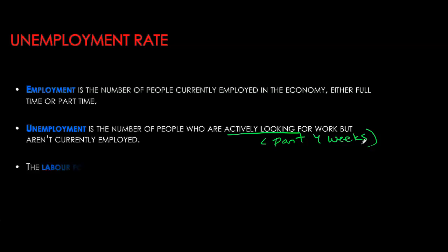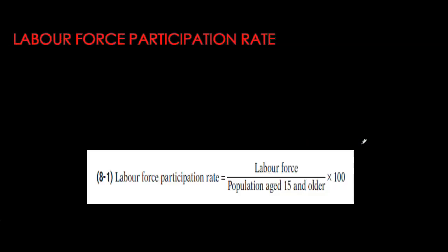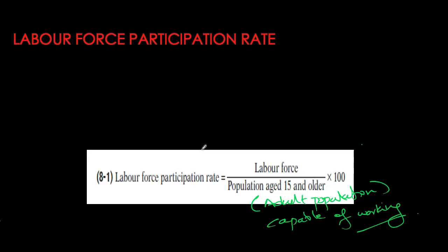The third category is that you are 15 years of age or older but you are neither unemployed nor employed, and therefore you are not part of the labor force. The labor force is the sum of the total number of employed and the total number of unemployed. The labor force participation rate is the percentage of the working age population in the labor force, calculated by dividing the labor force by the adult or working age population.